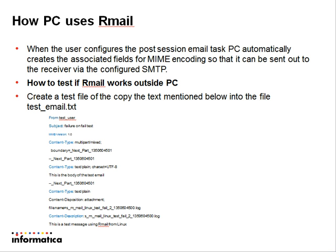Now, let's see how PowerCenter uses R-Mail to send out these emails. When the user configures a post-session email task in your session, PowerCenter automatically creates the associated MIME encoding fields so that it can be sent out to the receiver via the configured SMTP. Below, you see the example of a MIME encoding where you have the from, the subject, the MIME version, content type, and content description. Based on how and what you want to do with the email task, this body or description varies. You don't have to worry about these because PowerCenter automatically generates them.